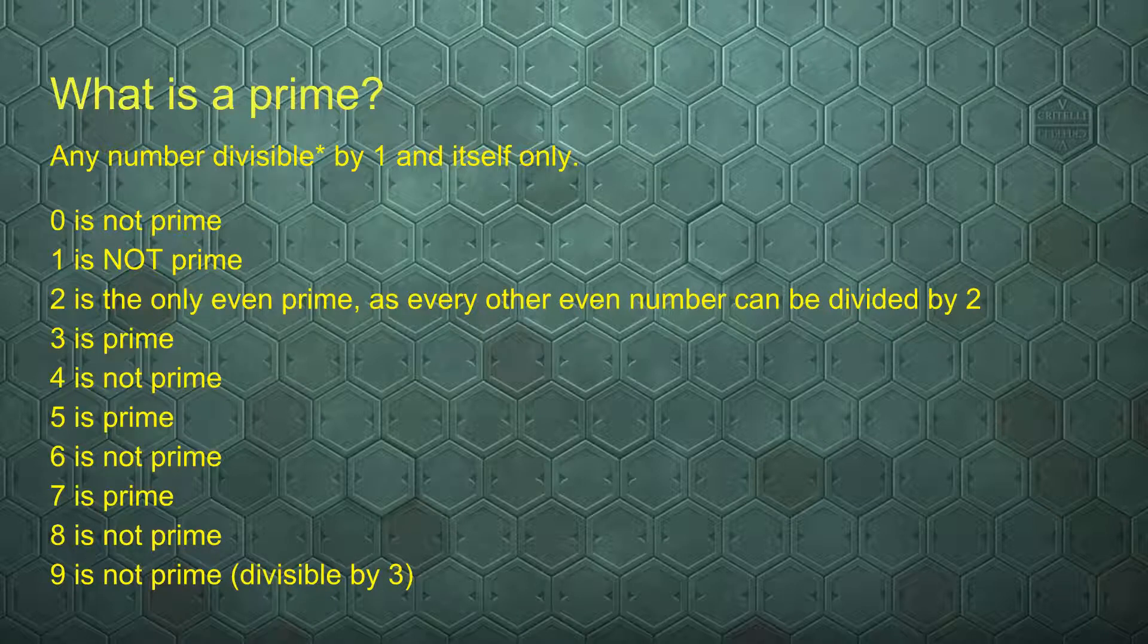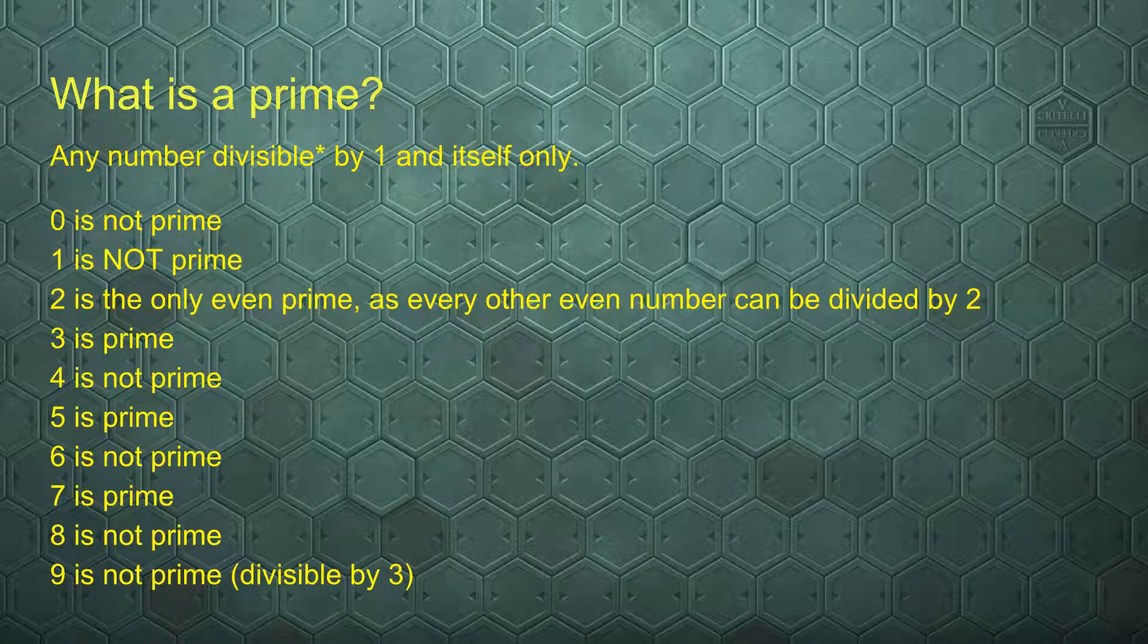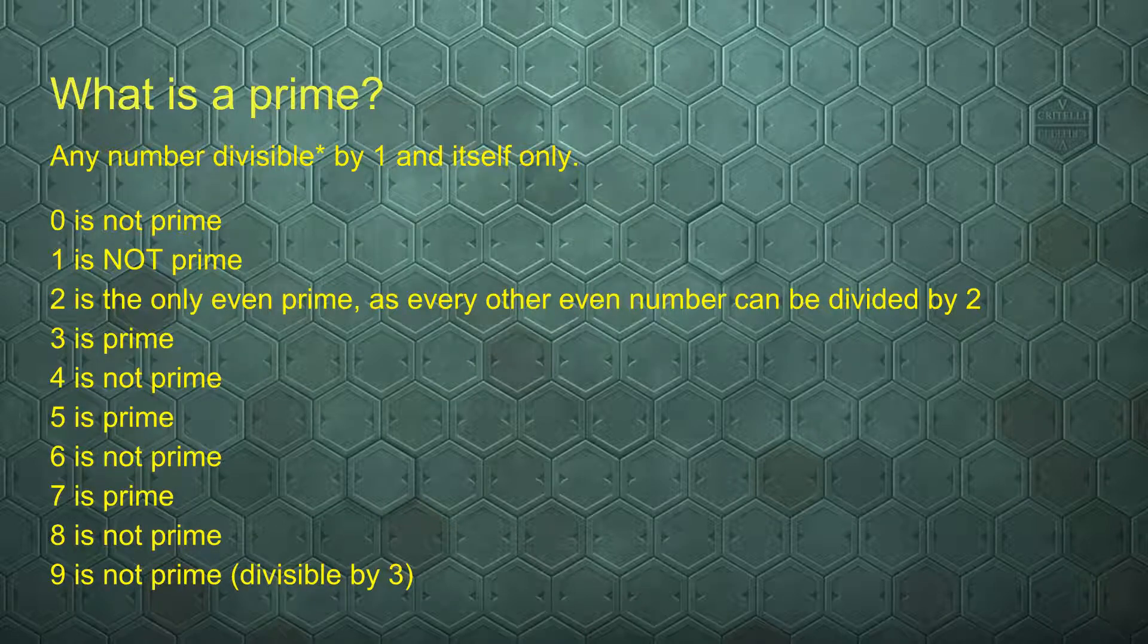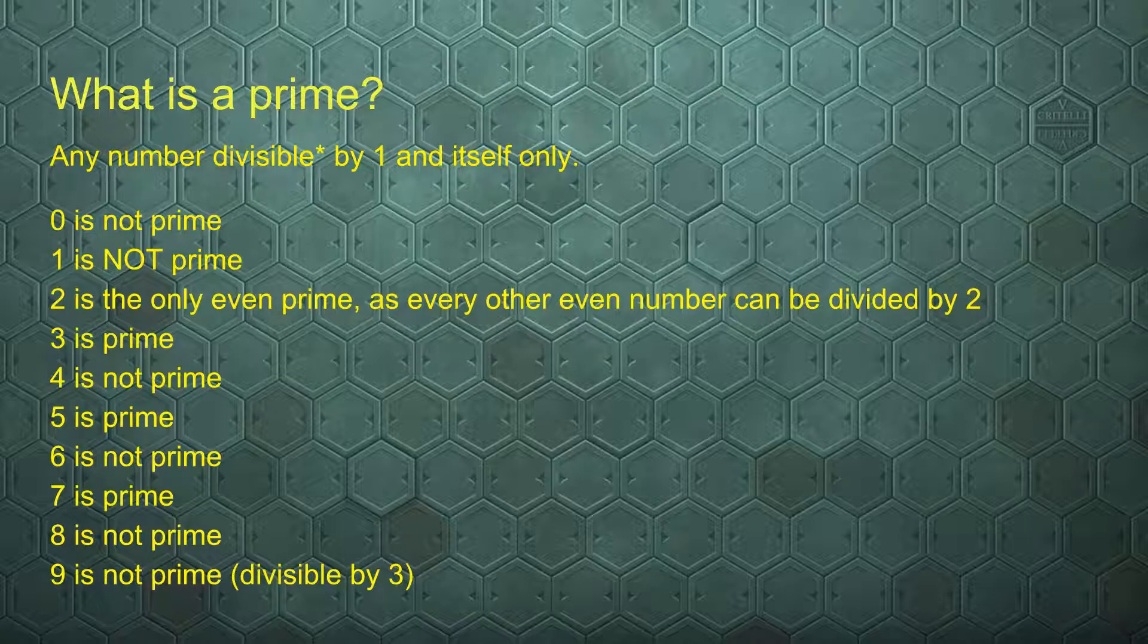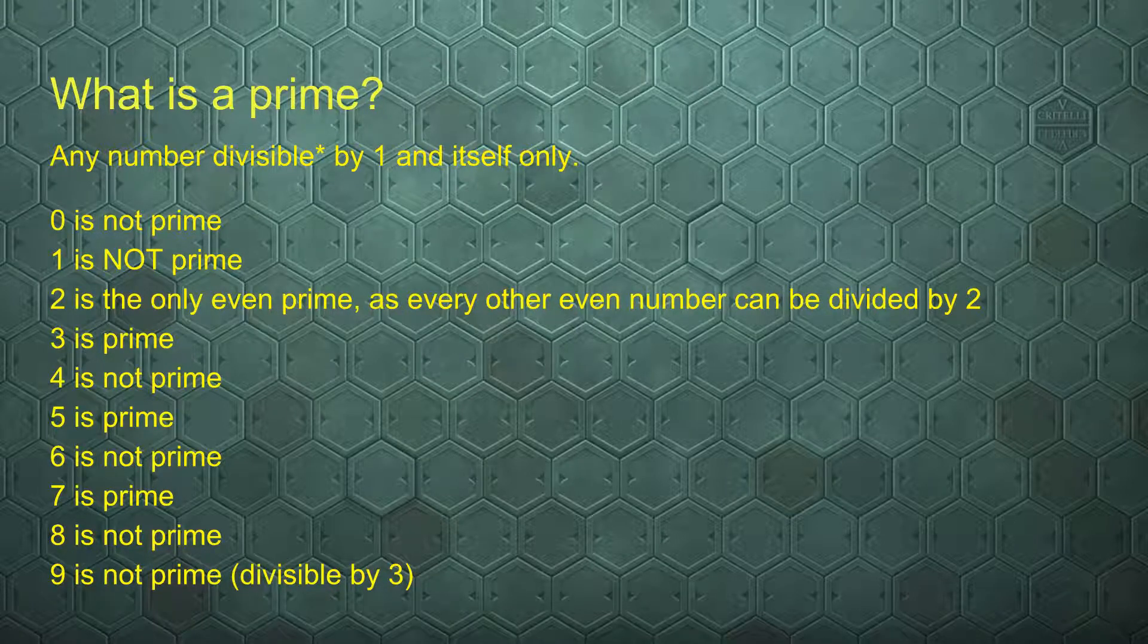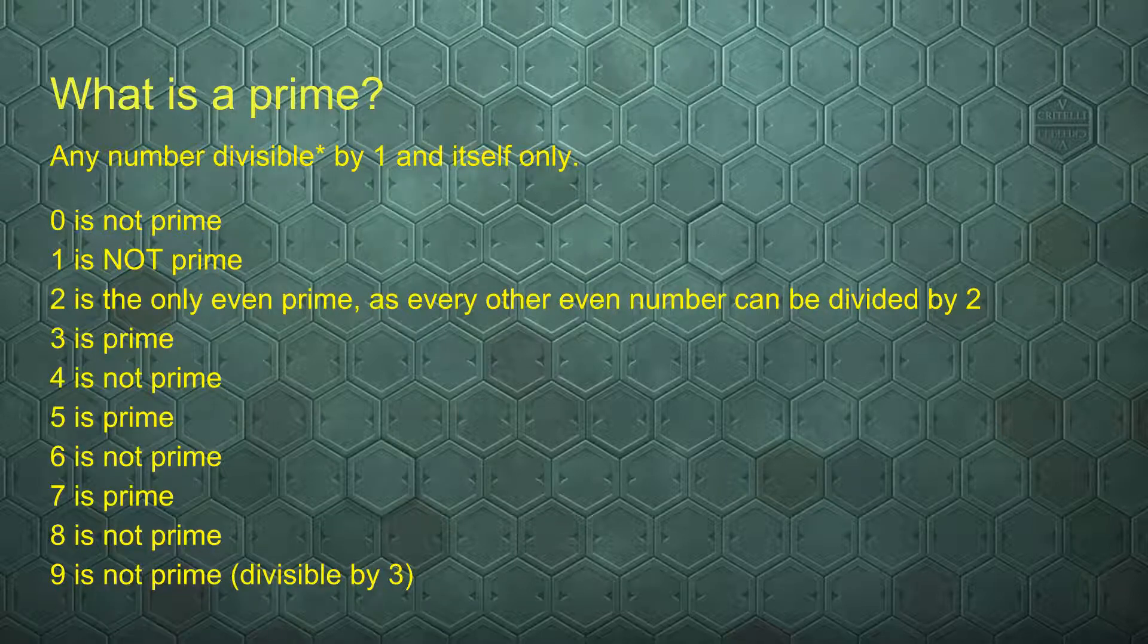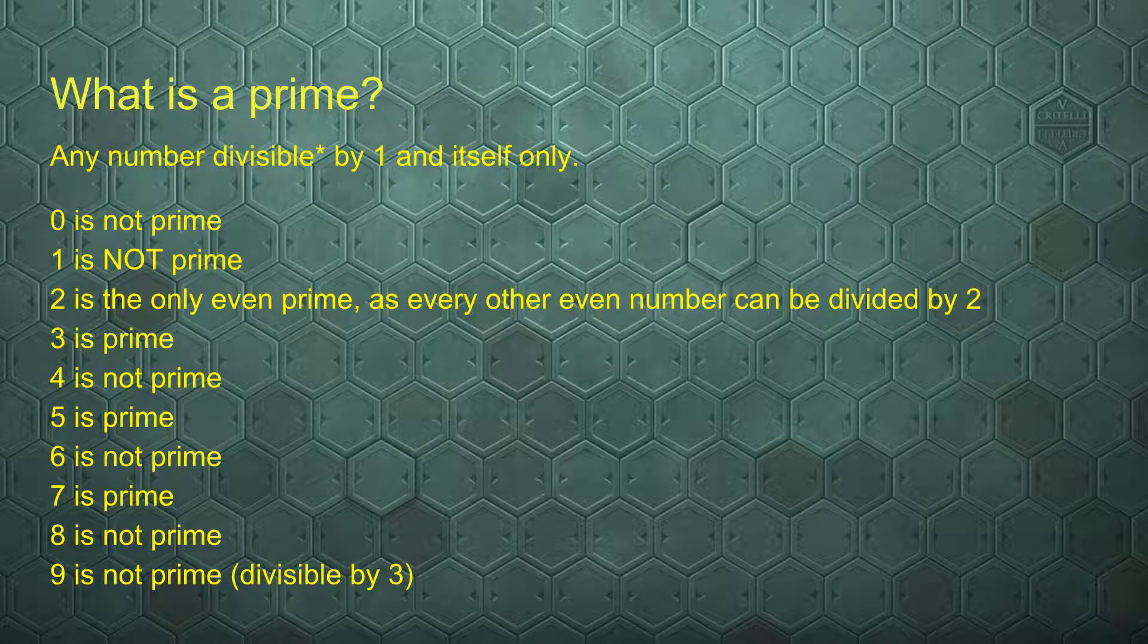2 is the only even prime because every other even number can be divided by 2 and therefore is not prime. 3 is a prime as it cannot be divided except by 1 and itself. 4 is not prime, it can obviously be divided by 2 and therefore is not prime.